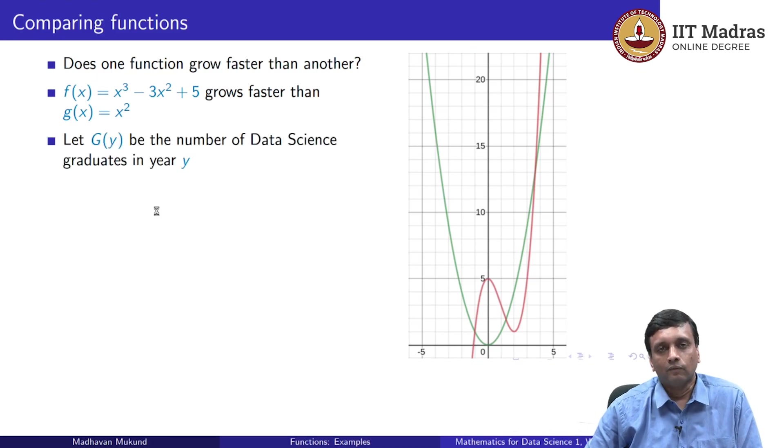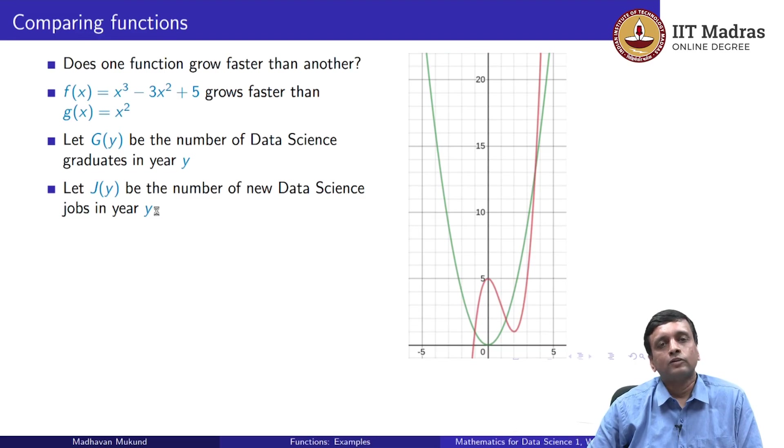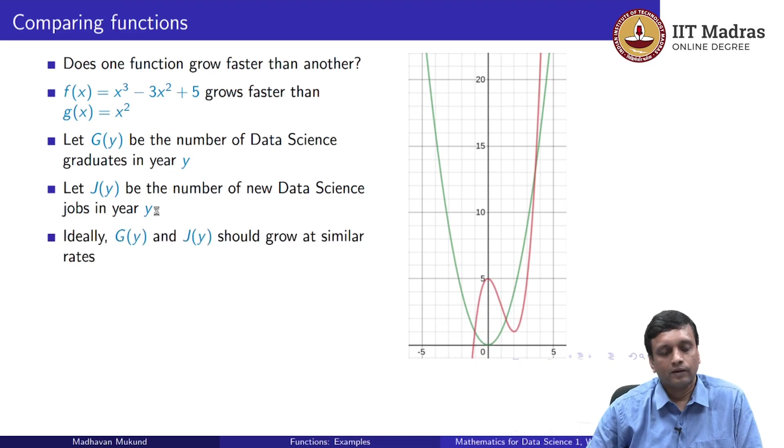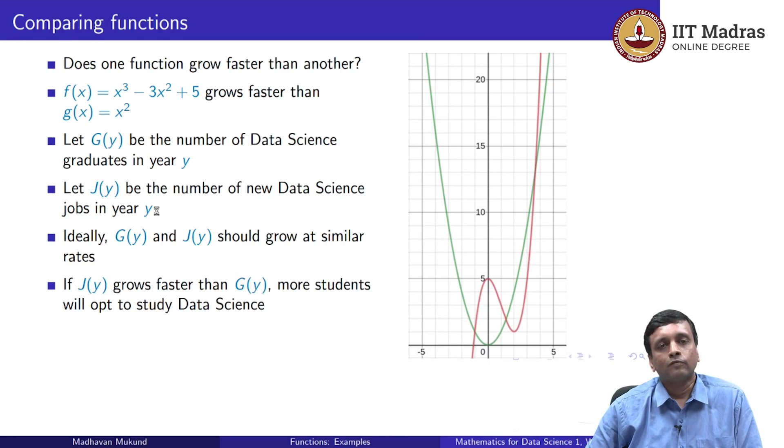Now, why is this interesting? Well, we often see this informally stated in various contexts. So let us look at a context which is relevant for you. So let G(y) be the number of data science students graduating in a year y. So as the year increases, so we go from 2020 to 2021 and so on, the value G takes a certain number and hopefully because courses are growing, this number is increasing. At the same time, there are jobs being created in data science. So let J(y) be the number of new data science jobs in a year. Now, ideally, you would like that these two are comparable, that the jobs are growing because the number of graduates is growing and vice versa. If the number of jobs increases more than the number of graduates, then there is a demand for graduates and of course, more graduates will opt to study data science. So you would expect a demand for this kind of course. Of course, the unfortunate case might happen the other way around, if suddenly there is a slump in demand, then people who graduate with a degree in data science will not be employable and then there will be a reverse trend. So these are some of the reasons why when we look at data, we are interested in comparing the growth rate of functions and we will look at this in the context of the functions that we study mathematically.